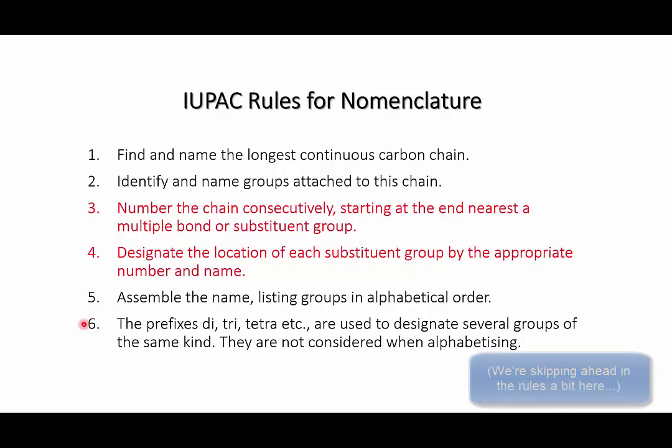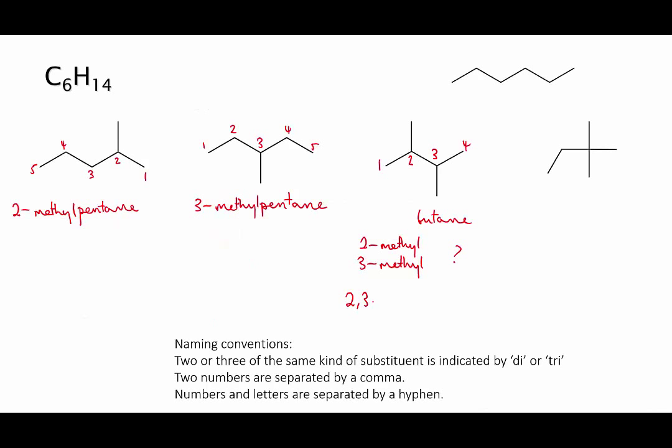So this molecule is based on butane. It has two methyl groups, so we say dimethyl. And the carbons that they're attached to are carbons two and three. So the final name of this molecule is 2,3-dimethylbutane. Note the comma between the numbers. We always separate numbers using a comma, and we separate numbers and letters using a hyphen.